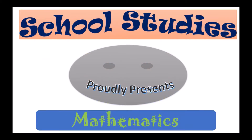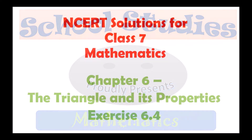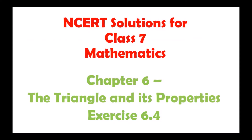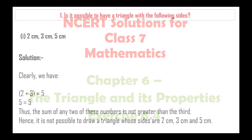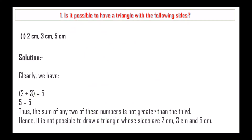Today we will see a video related to mathematics subject. Today's topic is NCERT solution for Class 7 Mathematics Chapter 6, The Triangle and its Properties. Let's solve Exercise 6.4 of the textbook. The first question is: is it possible to have a triangle with the following sides?